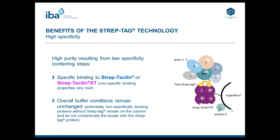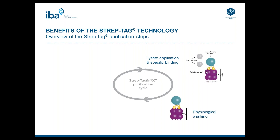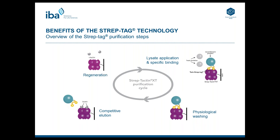Let's have a look at the very easy and simple purification cycle of Streptactin XT. The first step is to apply your lysate on the column where specific binding occurs. Using physiological buffer conditions, all non-specific host proteins are washed down from the column. The third step is a competitive elution done by simple addition of biotin to the buffer, where the target protein is eluted. Finally, the resin can be regenerated by addition of low concentrated sodium hydroxide and then reused at least three to five times — though some people use it up to 10 or 20 times.